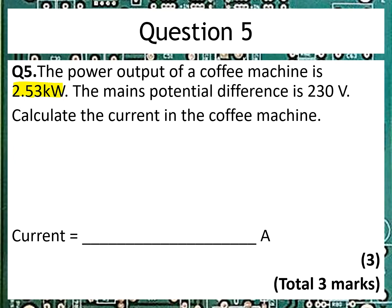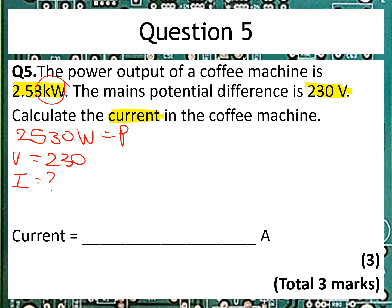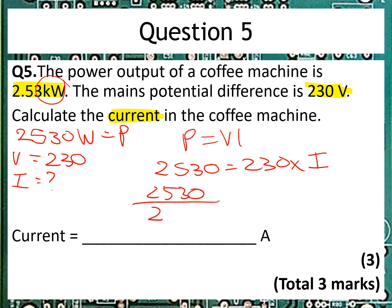So we've got power and voltage, and we're being asked to find the current. The power is given in kilowatts, so we're going to have to do a conversion. Remember, kilo means 1,000 — so 2.53 kilowatts is 2,530 watts. The voltage is equal to 230 mains. Using P equals VI and putting the numbers in: 2,530 is equal to 230 times I. We reverse the maths: 2,530 divided by 230 gives us 11 amps. It's a three-mark question, and that's your hint to look out for the kilowatts-to-watts conversion.